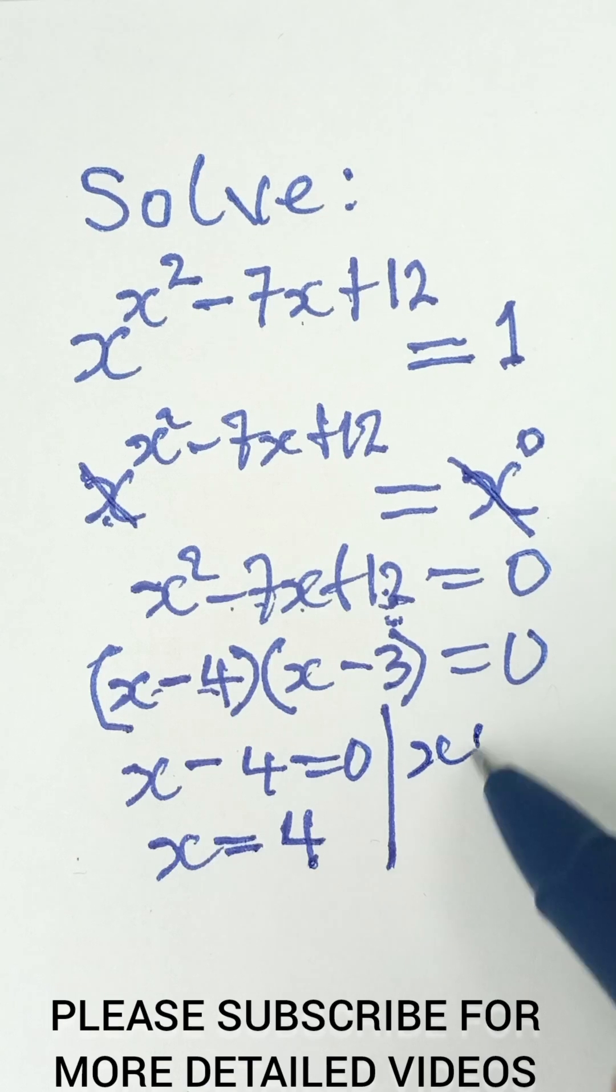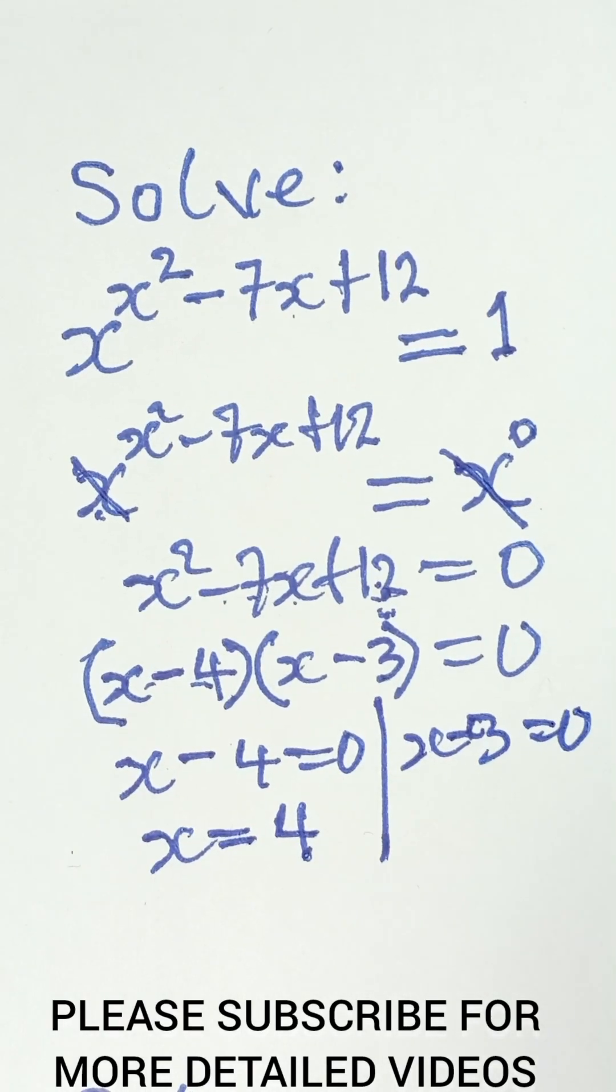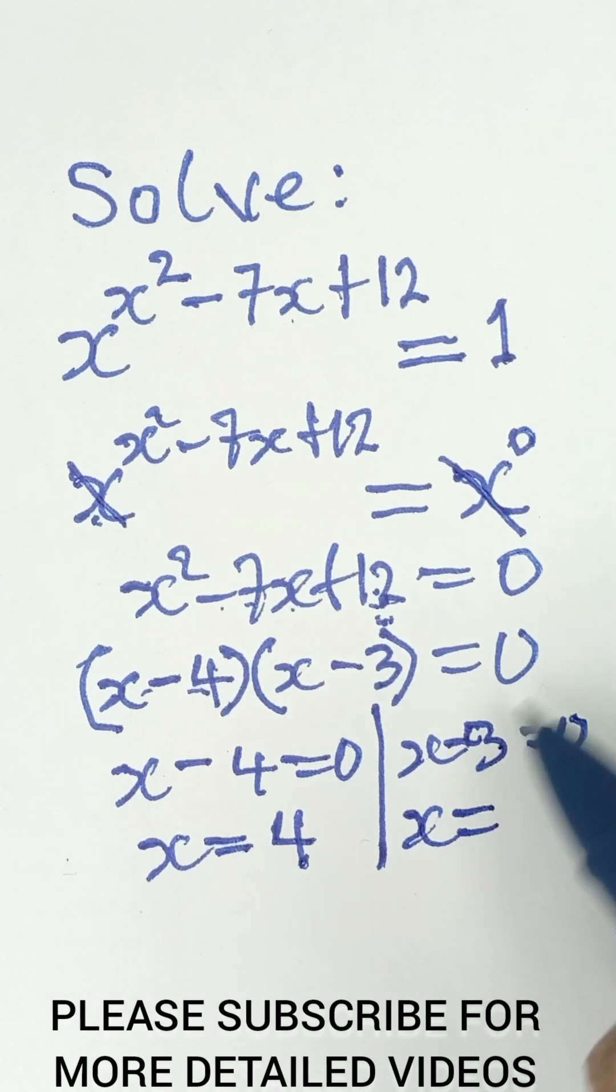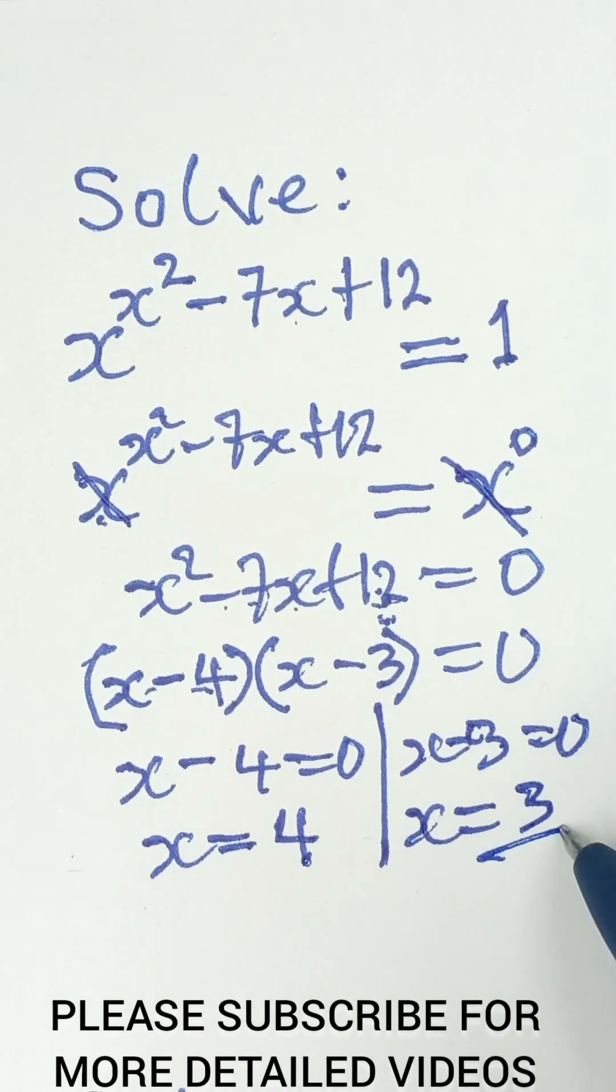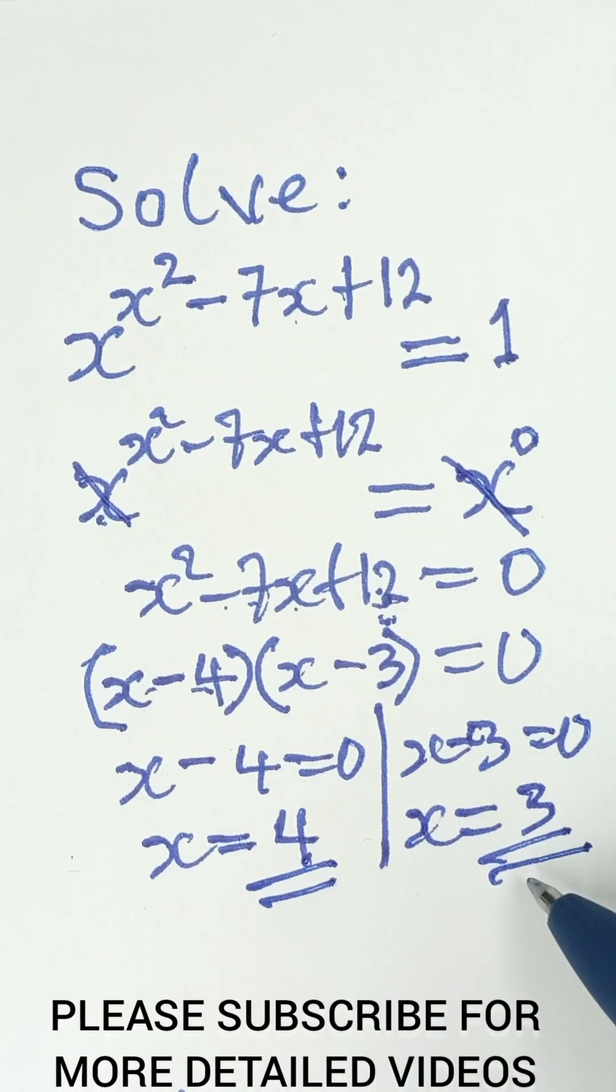Now, the second bracket, x minus 3 is equal to 0 as well. So, we now have x is equal to, when this negative 3 goes to that side, it becomes positive 3. So, the two solutions are giving us 4 and 3.